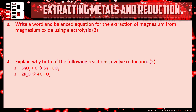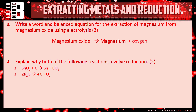Question three: write the word and balanced equations for the extraction of magnesium from magnesium oxide. The important thing is figuring out what you start with, which is magnesium oxide. You split it up with electrolysis to get the metal magnesium and oxygen. Magnesium oxide contains oxygen, therefore you're going to have oxygen left over.